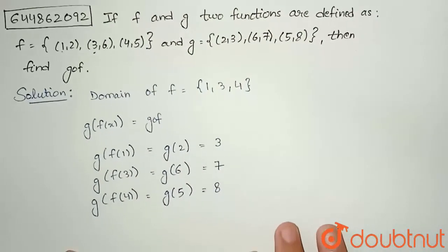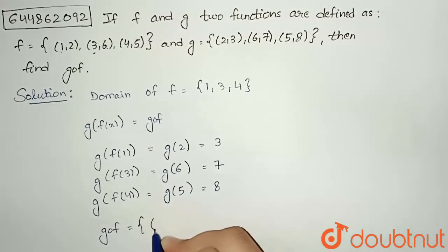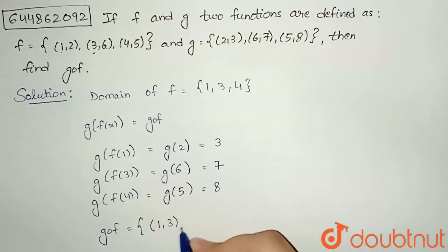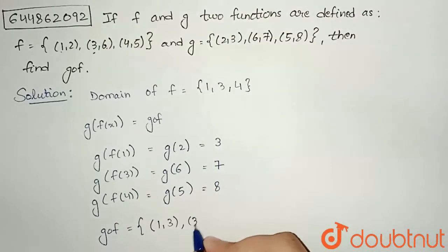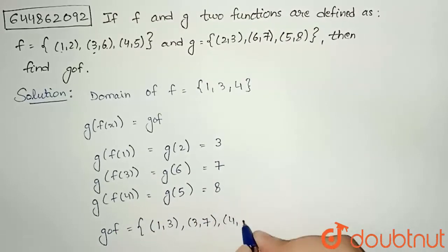So what I can write finally that gof equal to, if I write in terms of ordered pair, so input was 1 and output was 3, here input was 3 so output 7, and when input is 4 so output will be 8. So this will be my final answer for gof.